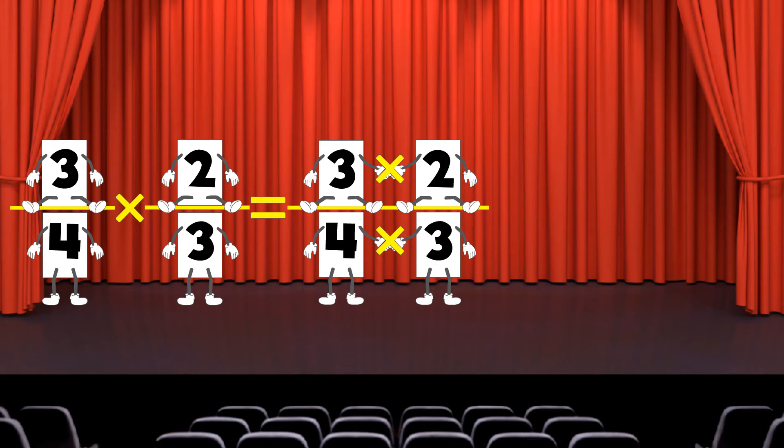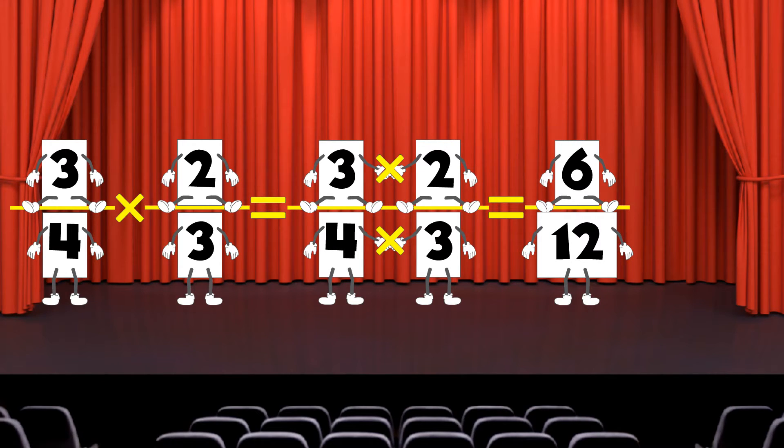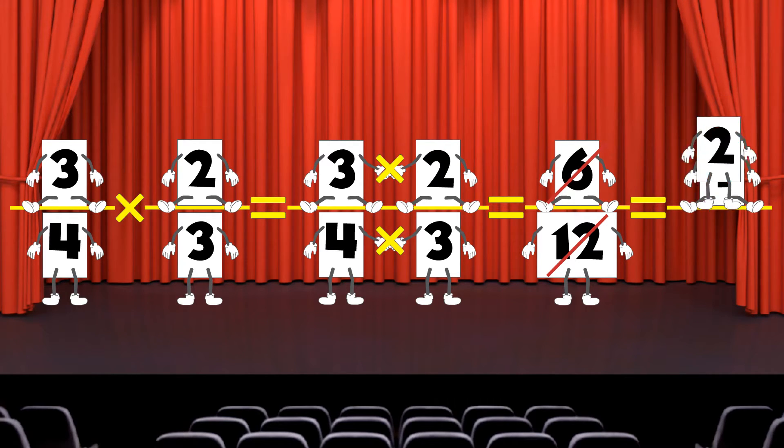Let's do another example, 3 fourths times 2 thirds. First we multiply the numerators, 3 times 2. Next we multiply the denominators, 4 times 3. We get 6 over 12. We can simplify this fraction by dividing both the numerator and the denominator by 6. We get 1 half.